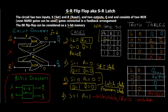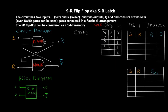Now let's look at the SR flip-flop using NAND gates. The same approach applies: we'll see the circuit diagram, block diagram, and calculate the four different cases since we still have two inputs. The NAND gate arrangement is similar to the NOR version, but instead of NOR gates we have NAND gates. Note that the inputs S-bar and R-bar are used here, and the outputs are slightly different — the cases will differ from the NOR version.